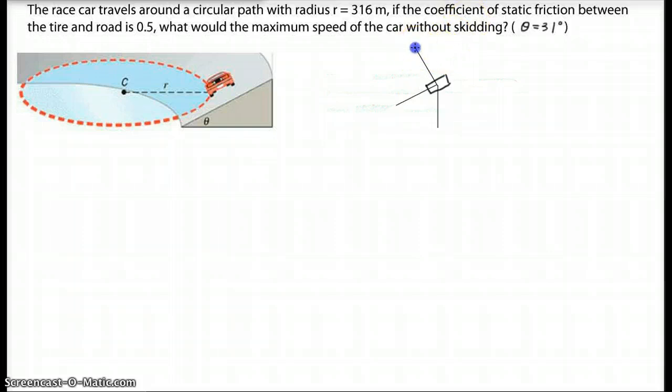So label: this is Fn, Fg, Ff. For any circular motion problem, you need to realize we must have a net force going towards the center. So the center is about here. And then we have to resolve all the forces into a component along this central direction.